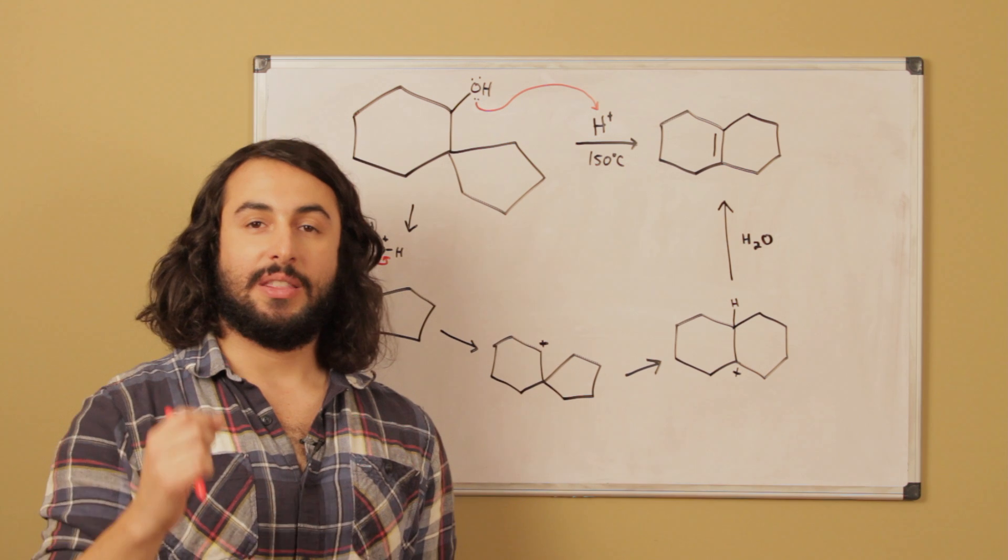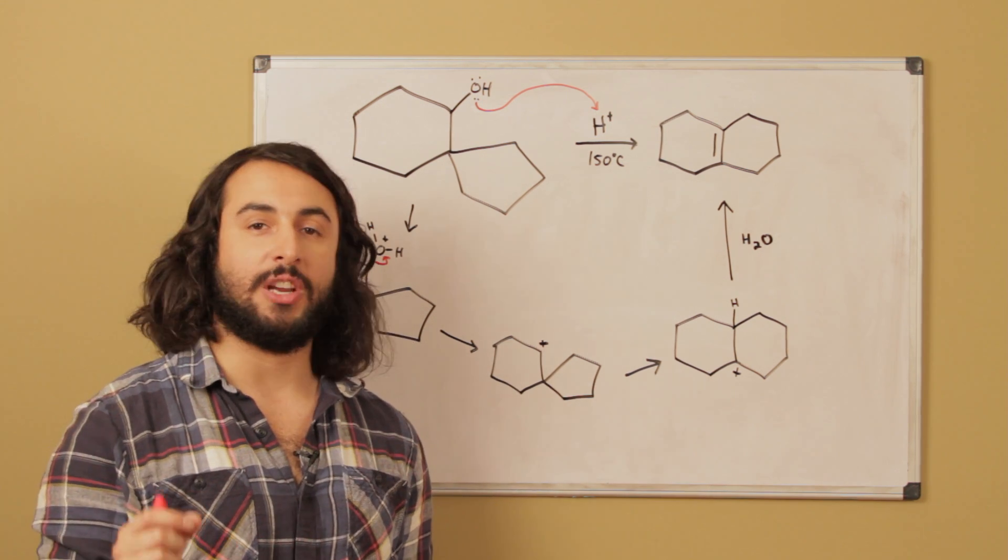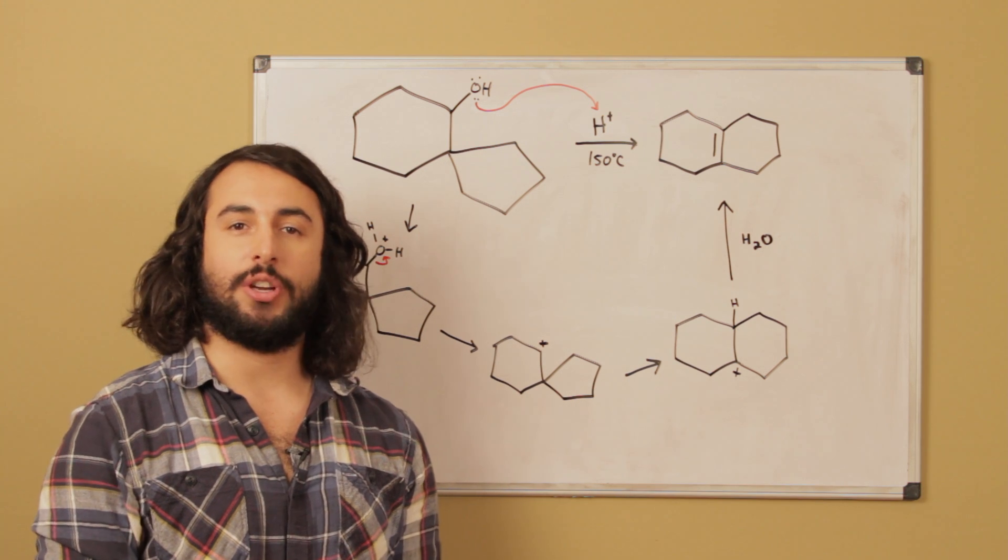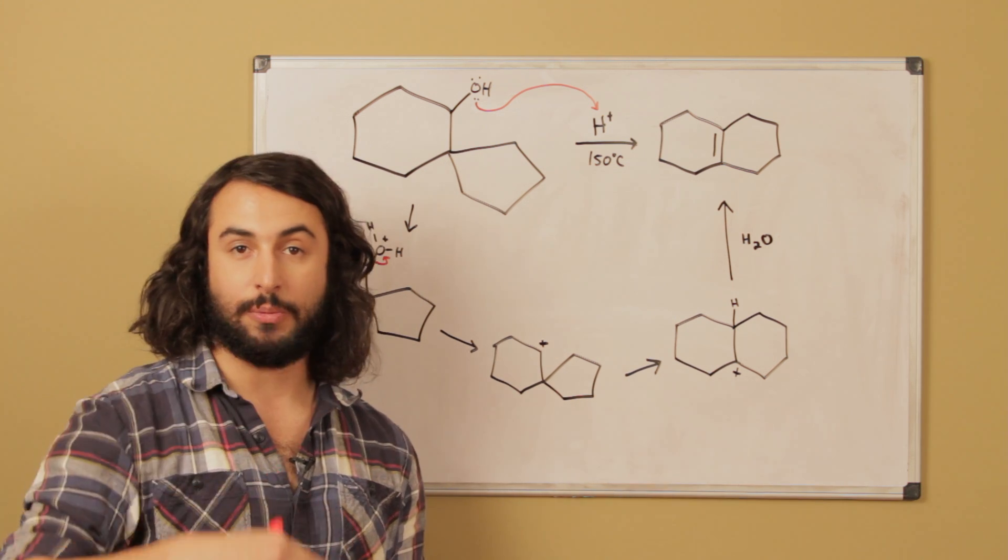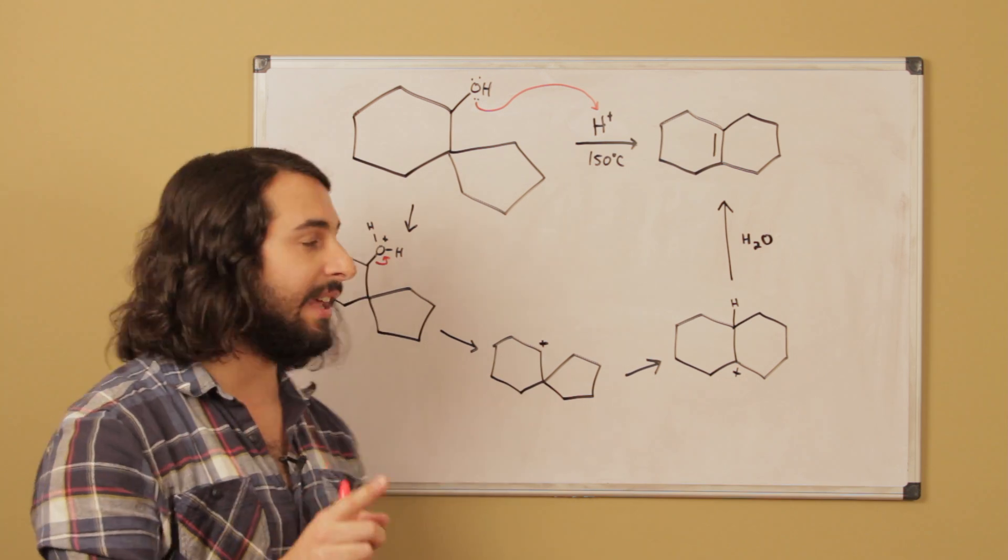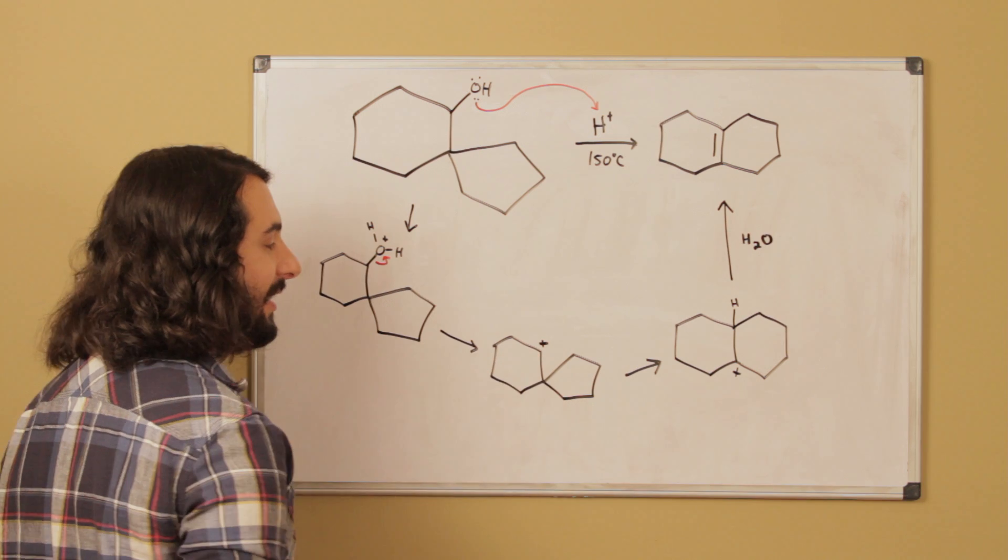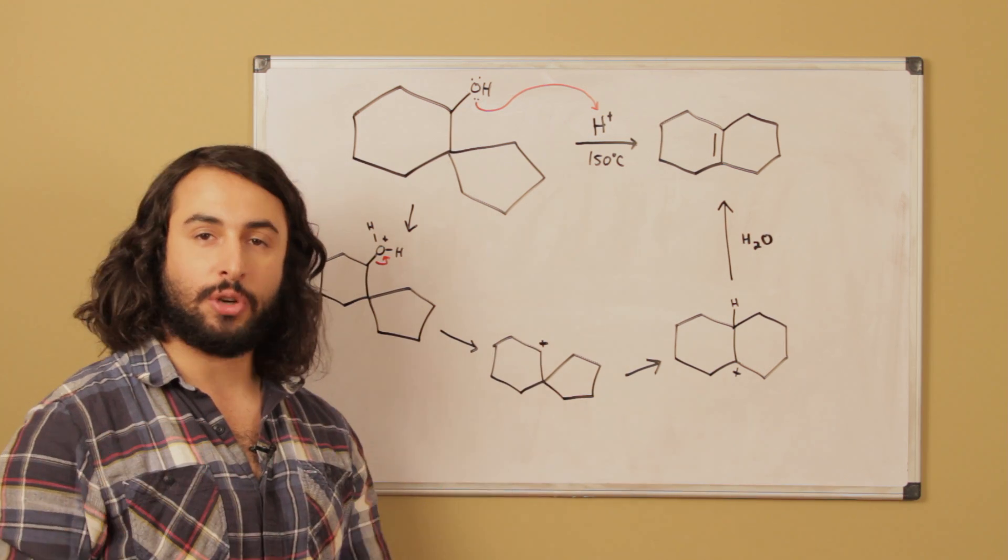Now this is the key step - this is a carbocation rearrangement step. If we remember from the other lectures we can have a hydride shift or we can have a methanide shift where actual alkyl groups are moving. But the interesting thing here is that this is going to be able to rearrange to turn a secondary carbocation into a tertiary carbocation.